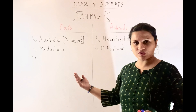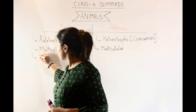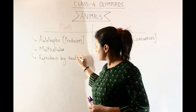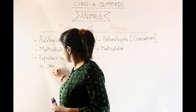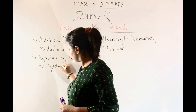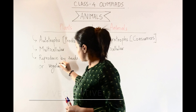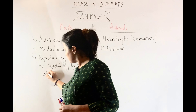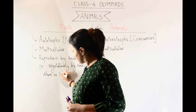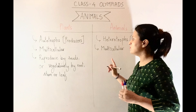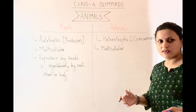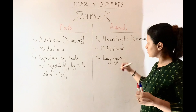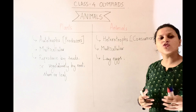How do plants reproduce? They will either produce seeds, or reproduce vegetatively through roots, stems, or leaves. How about animals? Do they also produce seeds? No — they either lay eggs or give birth to young ones.